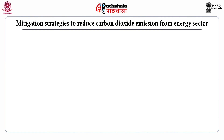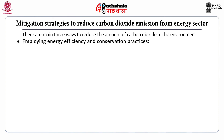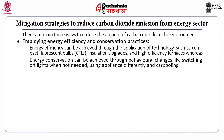Now we will see the mitigation strategies to reduce carbon dioxide emission, especially from the energy sector. There are three main ways to reduce the amount of carbon dioxide in the environment. One is employing energy efficiency and conservation practices. Energy efficiency can be achieved through the application of technologies such as using CFLs, insulation upgrades, and high-efficiency furnaces, whereas energy conservation can be achieved through behavioral changes like switching off lights when not needed, using appliances differently, and carpooling.